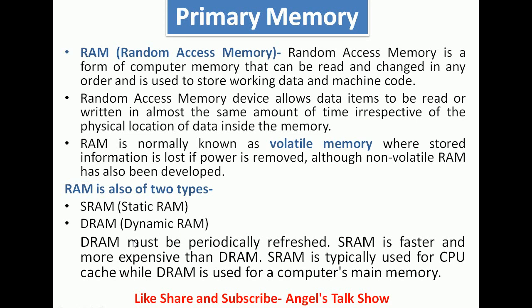RAM is normally known as volatile memory, where stored information is lost if power is removed, although non-volatile RAM has also been developed. RAM is of two types: SRAM (Static RAM) and DRAM (Dynamic RAM). DRAM must be periodically refreshed, while SRAM is faster and more expensive than DRAM. SRAM is typically used for CPU cache, while DRAM is used for a computer's main memory.